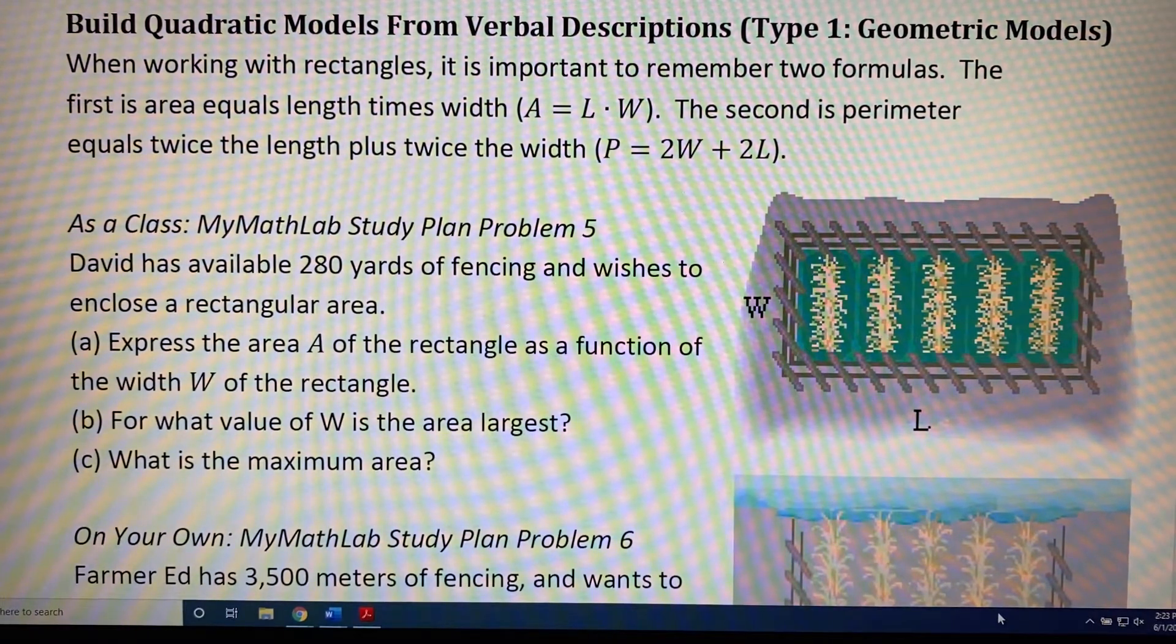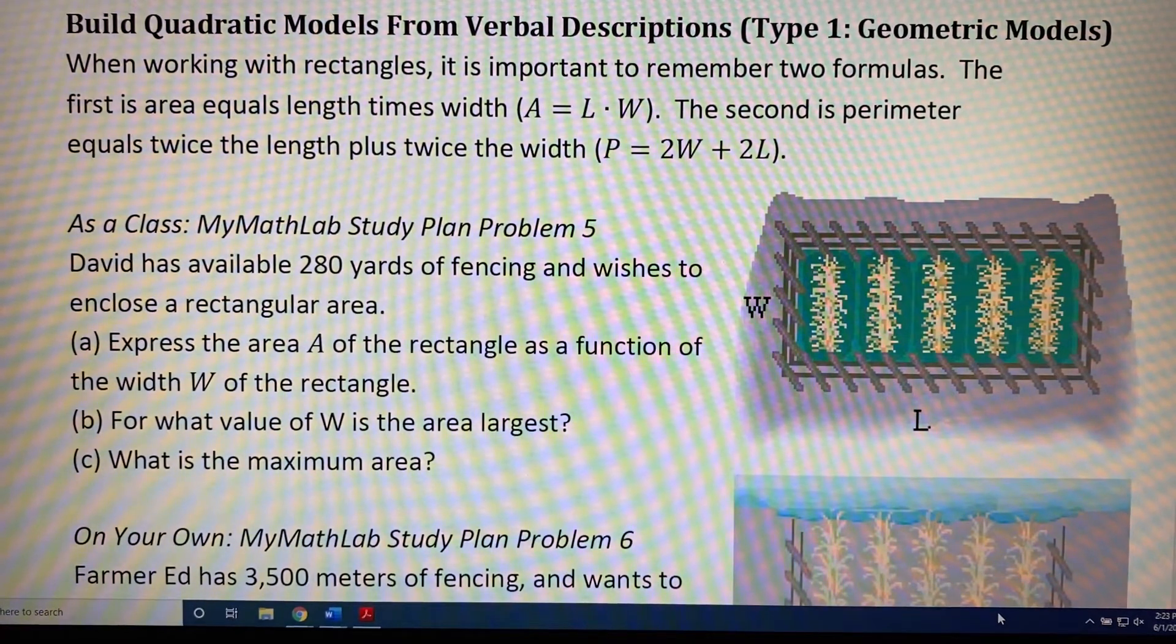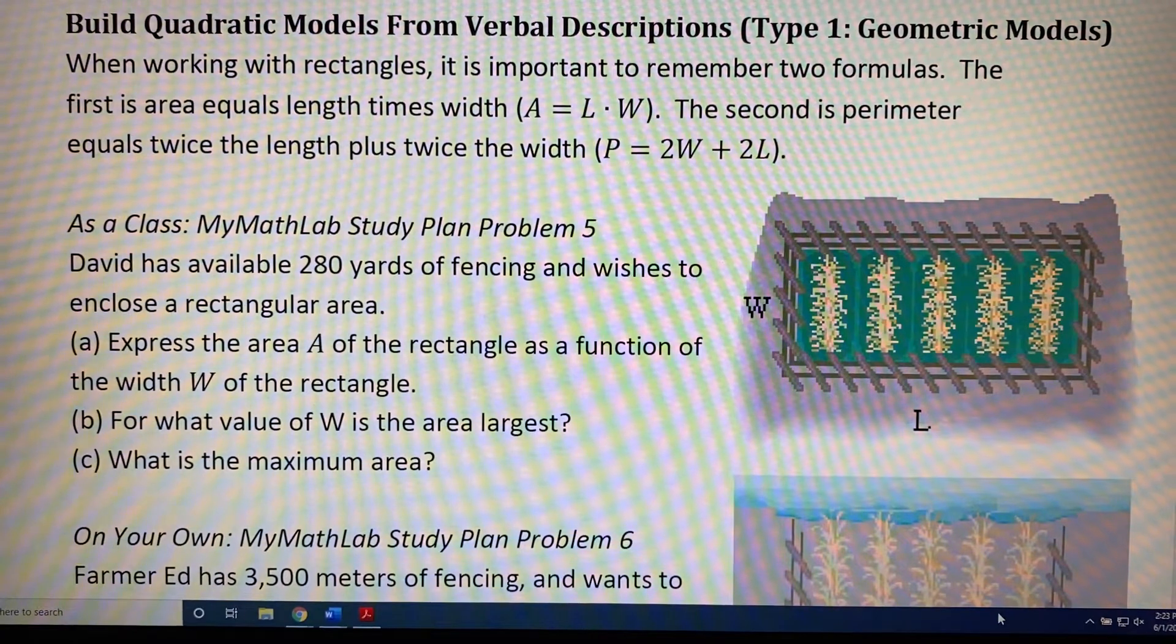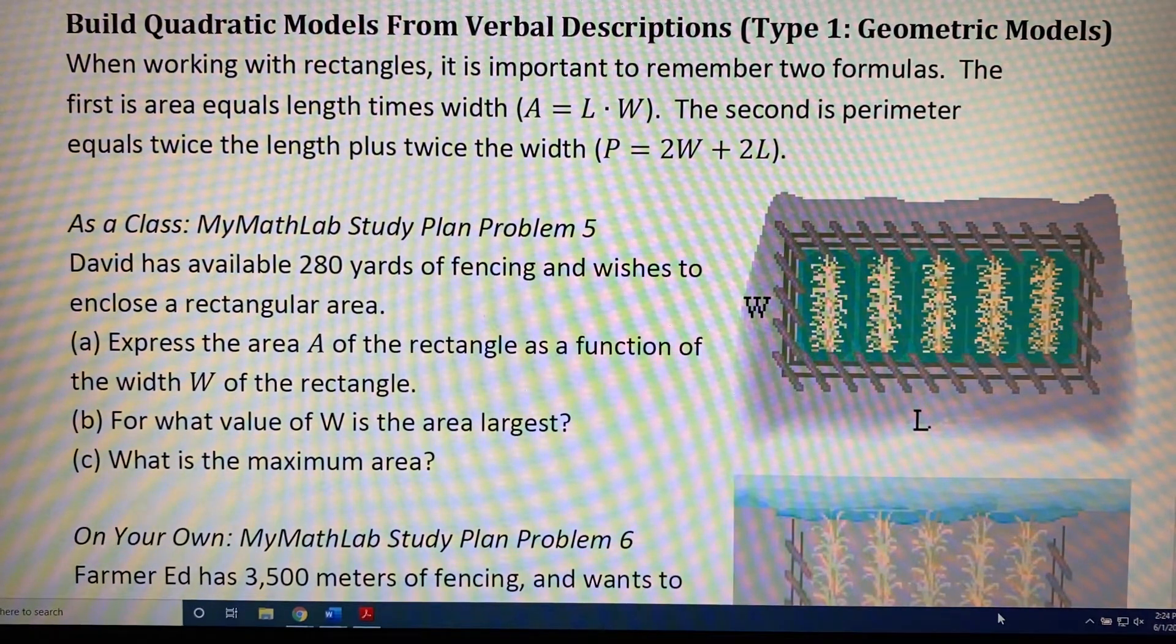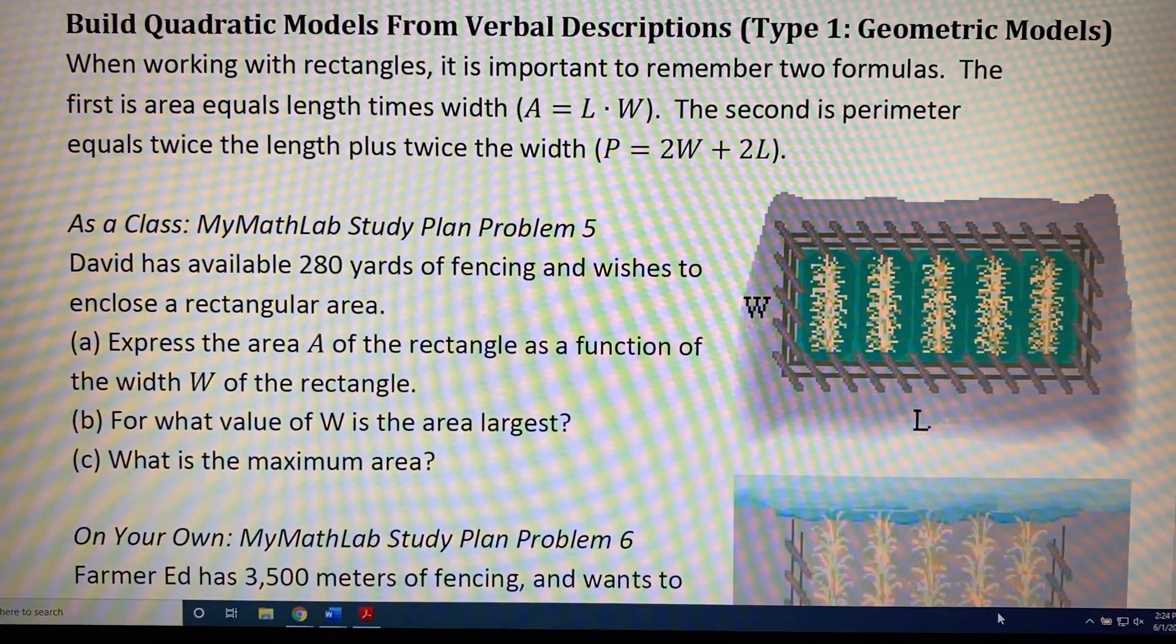When working with rectangles, it is important to remember two formulas. The first is area equals length times width, or stated algebraically, A equals L times W. The second is perimeter equals twice the length plus twice the width, or stated algebraically, P equals 2W plus 2L.